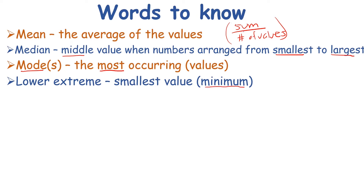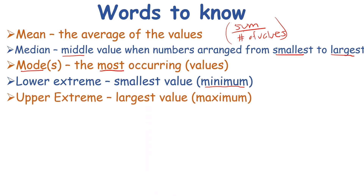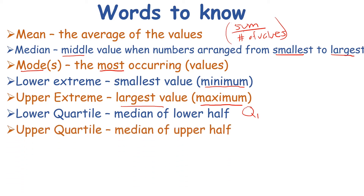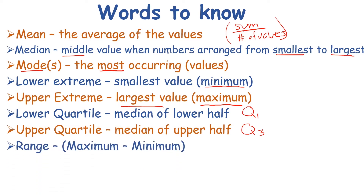Next we have the lower extreme — another word is the minimum — that's the smallest value. Upper extreme is your maximum, or your largest value. Next we have the lower quartile, that is the median of the lower half, and we use Q sub 1 for that. Then we have the upper quartile, the median of the upper half, called Q sub 3. Next we have the range — you subtract the minimum from the maximum, so the difference between the highest and lowest number is your range.